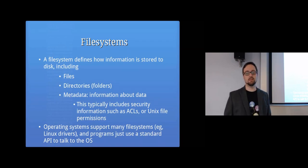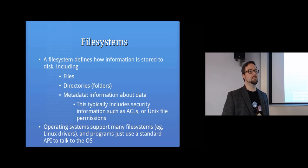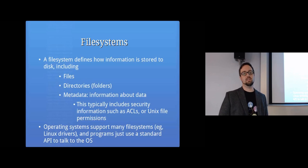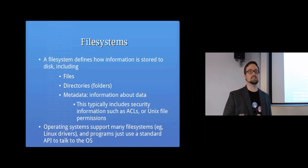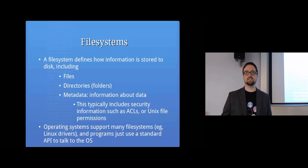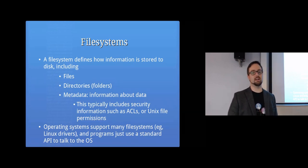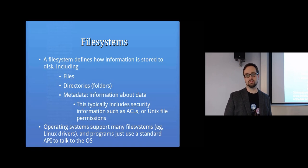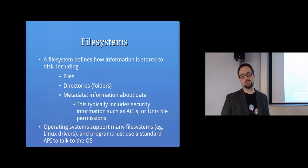That metadata typically includes security information. We talked about the fact that with an access control list the actual security information is attached to the object — in this case a file. So if we look at the metadata in the file system it will include the access control list and the security rules, or in this case Unix file permissions if we're talking about Unix in particular.